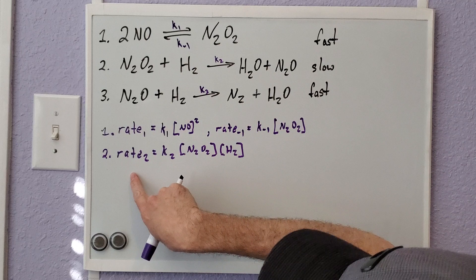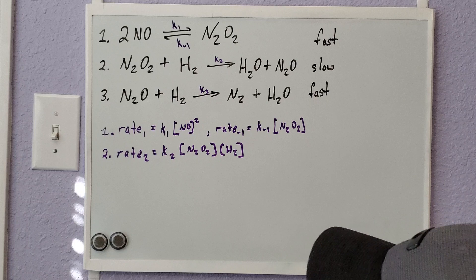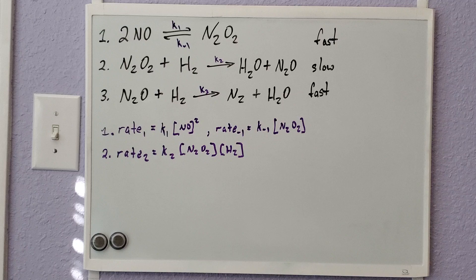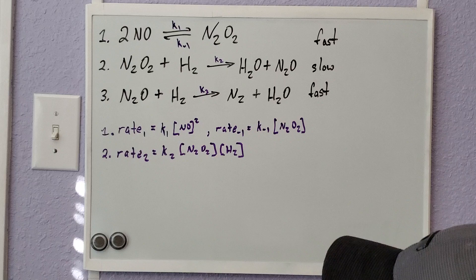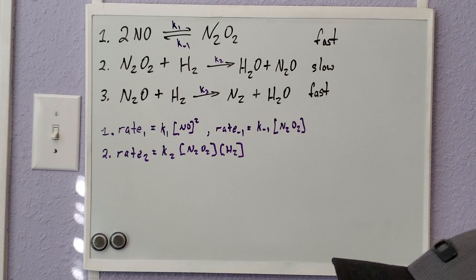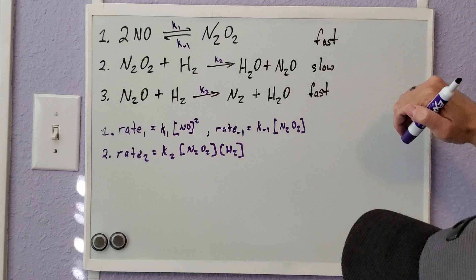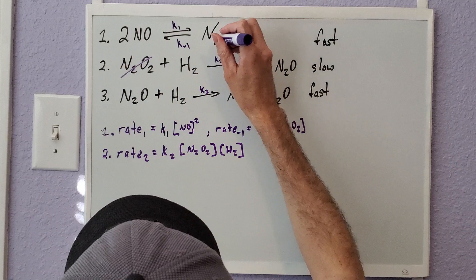According to what we discussed, the overall reaction rate should be dependent on Rate2: k2[N2O2][H2]. Now we need to verify that this rate law makes sense for the overall equation. Adding all the steps together, the N2O2 intermediate that appears as both a product and reactant cancels out, as does the N2O intermediate.